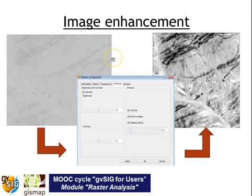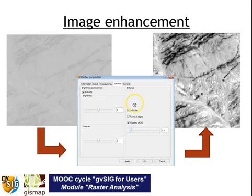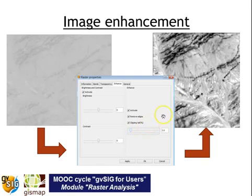We can also improve the visualization of images. In the raster properties contextual menu, I can activate brightness and contrast, activate enhancement, and remove extreme pixel values. I can also clip tails — increasing the percentage of extreme values that will be removed results in a better-visualized image.